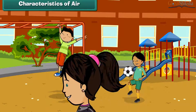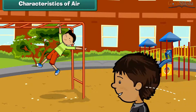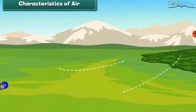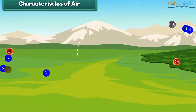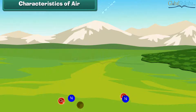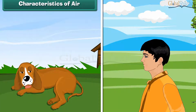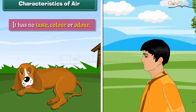Characteristics of air: We are surrounded by air. Air is a mixture of gases and other particles. It is essential for the survival of living things. All living things breathe in and breathe out air. It has no taste, color, or odor.